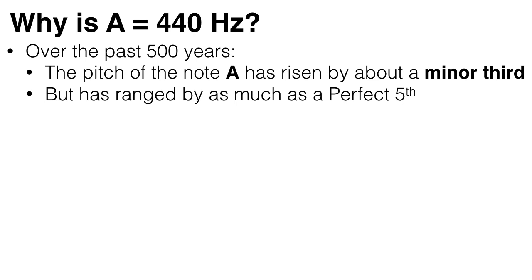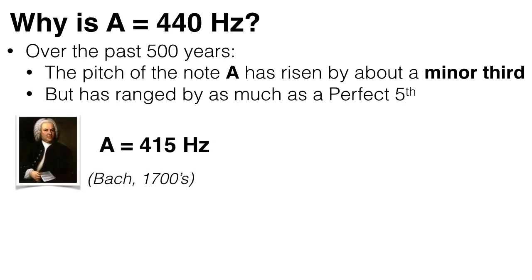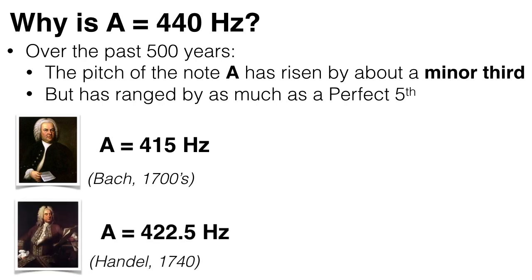For example, Baroque musicians tuned the note A to roughly 415 hertz, which is what Bach used. Handel, in 1740, used a tuning fork which set A to 422.5 hertz, while one found in 1780 had A at 409 hertz.